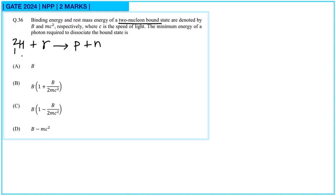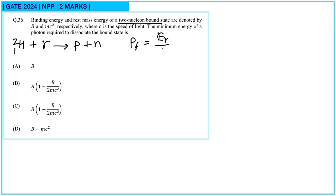By conservation of linear momentum, with the deuteron at rest, the photon momentum is Eγ/c, which equals the final momentum of the proton-neutron system. Energy is also conserved: initial energy is Mc² (rest mass of deuteron) plus Eγ (photon energy), and this equals the final energy, which has both kinetic energy and mass energy components.